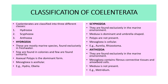The classification of Cnidaria is based on the presence of polyp and medusa forms. It is classified into three classes: Hydrozoa, Scyphozoa, and Anthozoa. Hydrozoa are mostly marine species, some found in fresh water. Few are found in colonies and few are solitary. The asexual polyp is the dominant form. Mesoglia is acellular. Examples include Hydra, Obelia, Sertularia, Plumularia, and Tubularia.